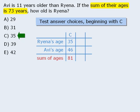But the question tells us that the sum of their ages must be 73, so we can eliminate answer choice C since the ages do not satisfy the given conditions. Also notice that the two ages have yielded a sum of 81, which is greater than the required sum. In other words, the ages of Ryena and Avi are too large, so Ryena's age must be less than 35, which means we can also eliminate answer choices D and E.